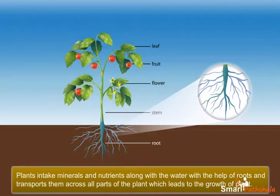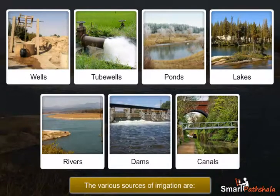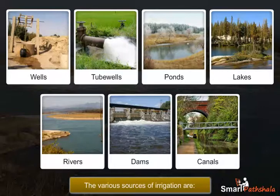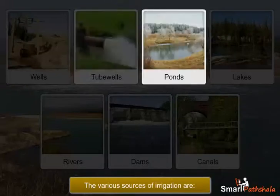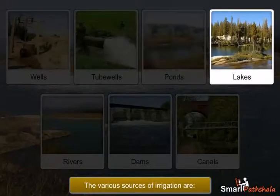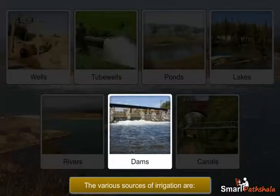Now let us learn about the sources of irrigation. The various sources of irrigation include wells, tube wells, ponds, lakes, rivers, dams, and canals.